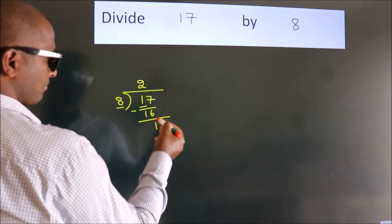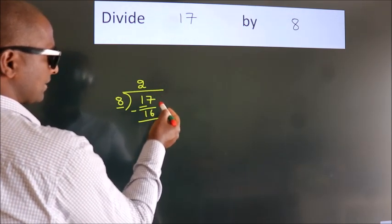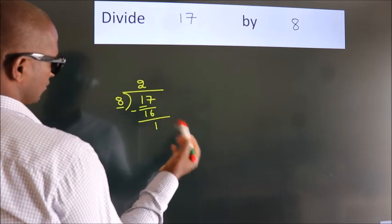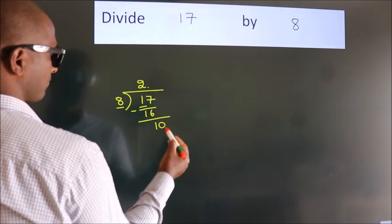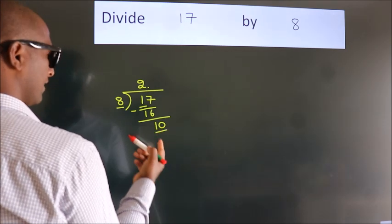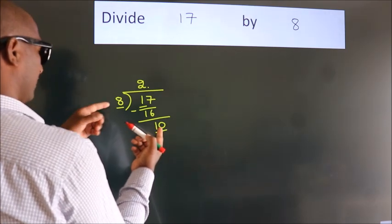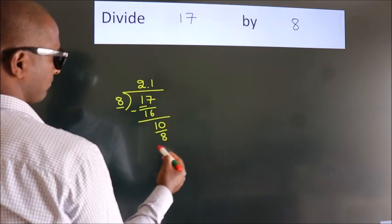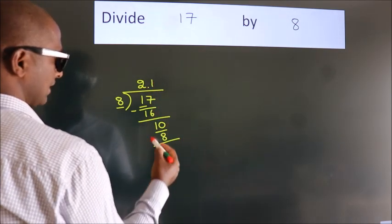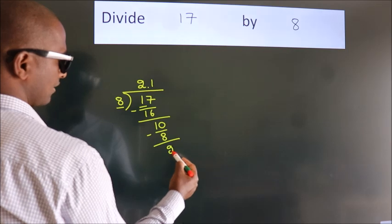After this, no more numbers to bring down. So what we do is, we put a dot and take 0. So 10. A number close to 10 in the 8 table is 8 once, 8. Now we subtract. We get 2.